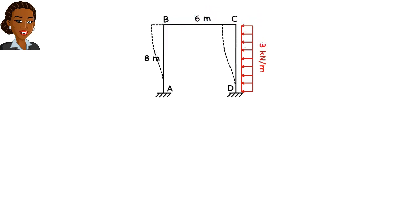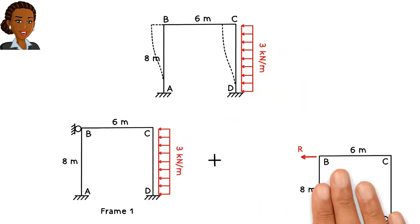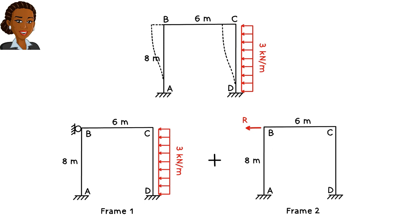So we can view it as a superposition of these two frames where R in frame 2 is the magnitude of the horizontal reaction at B in frame 1.